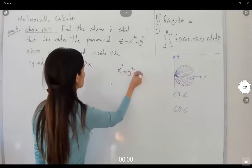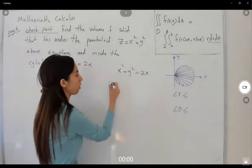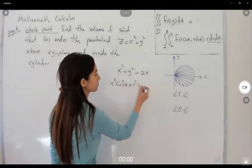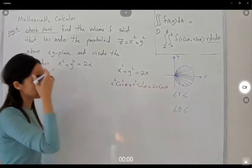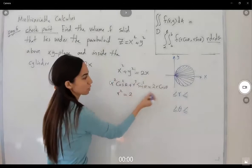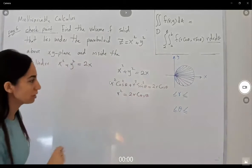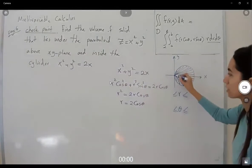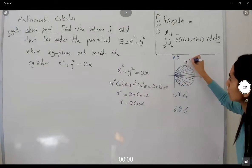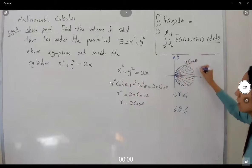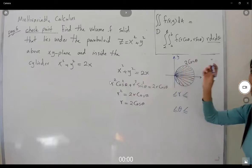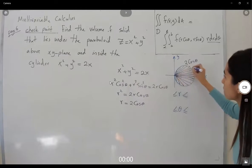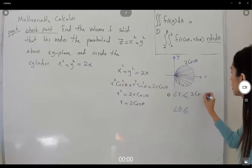We have x squared plus y squared equals 2x. Substituting x equals r cosine theta and y equals r sine theta, we get r squared cosine squared theta plus r squared sine squared theta equals 2r cosine theta. The left side simplifies to r squared, giving r squared equals 2r cosine theta, so r equals 2 cosine theta. Thus r ranges from 0 to 2 cosine theta.